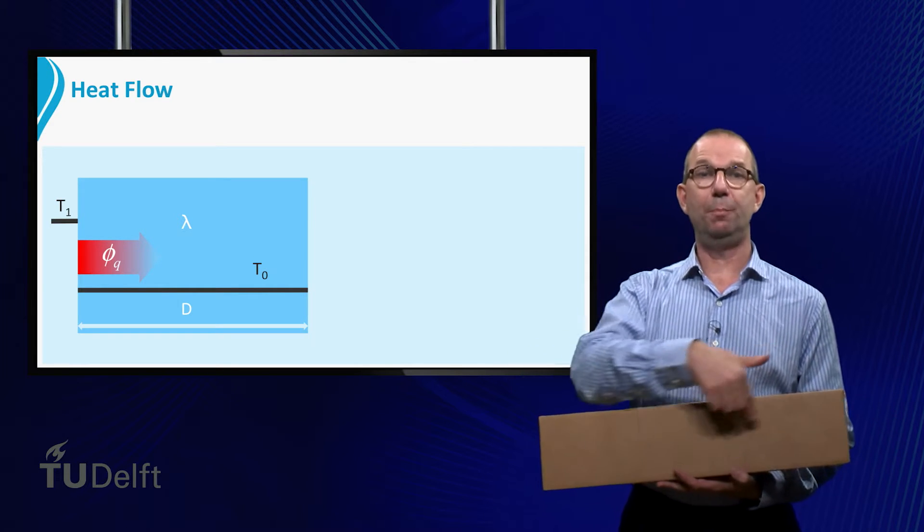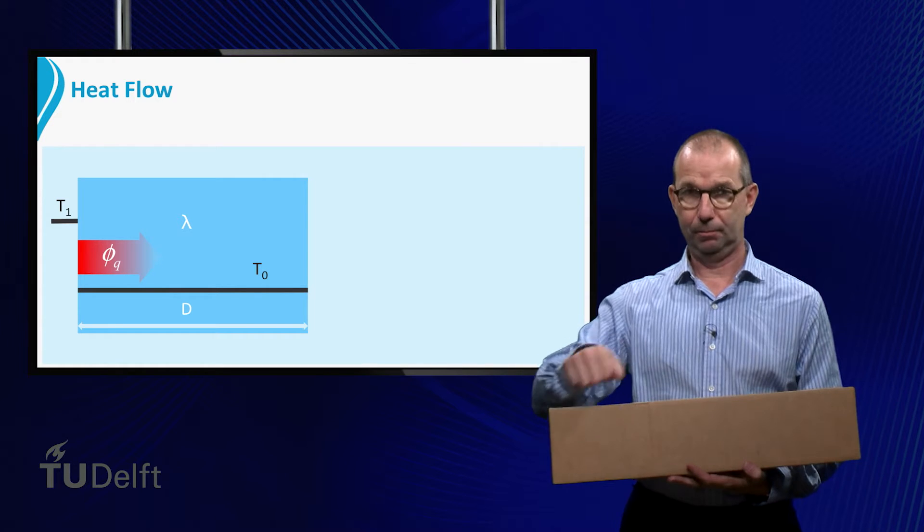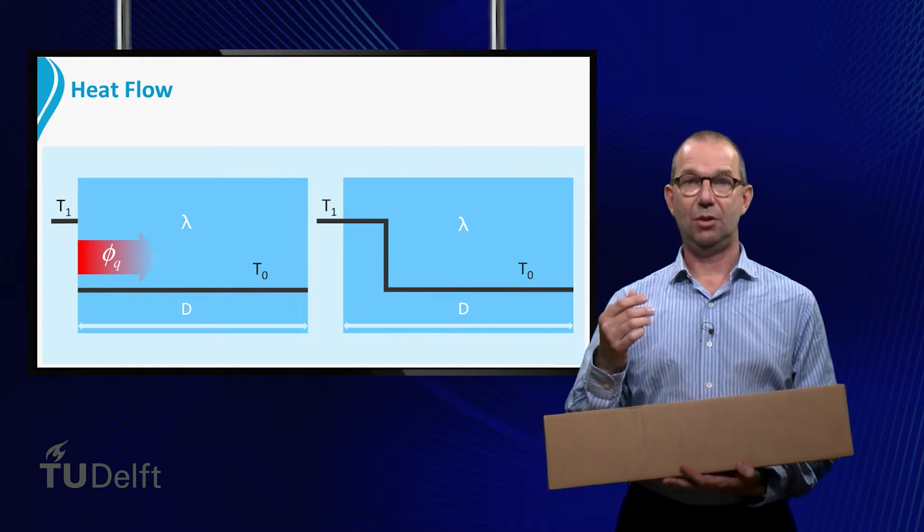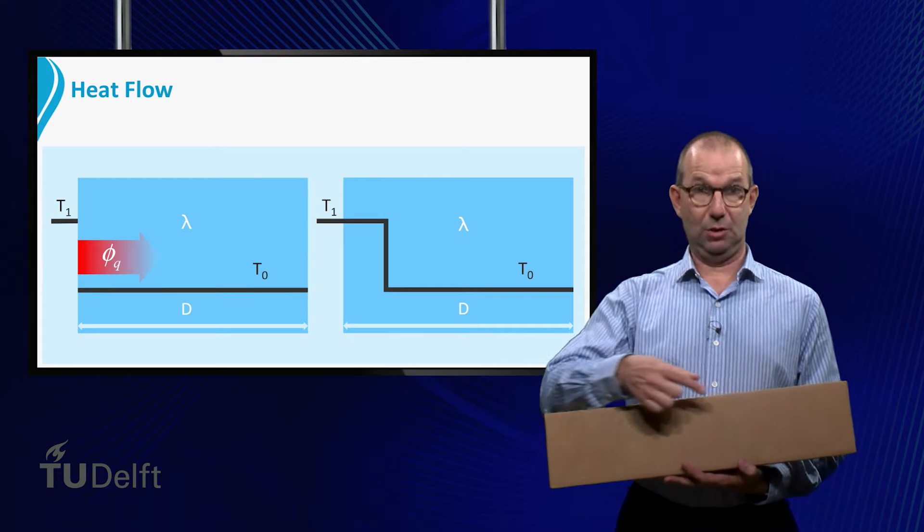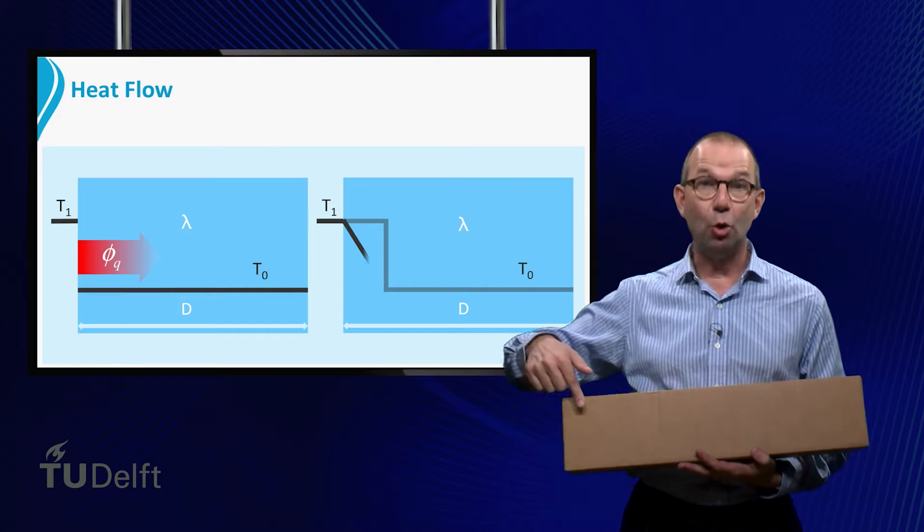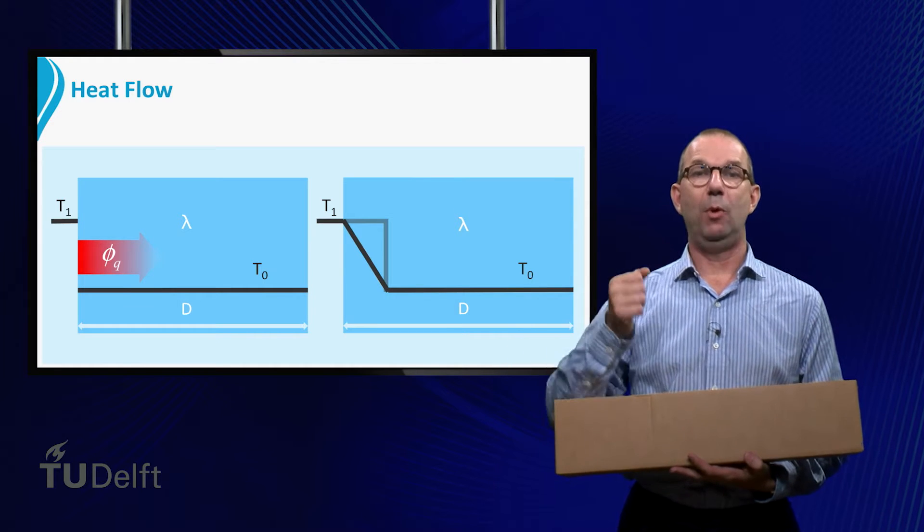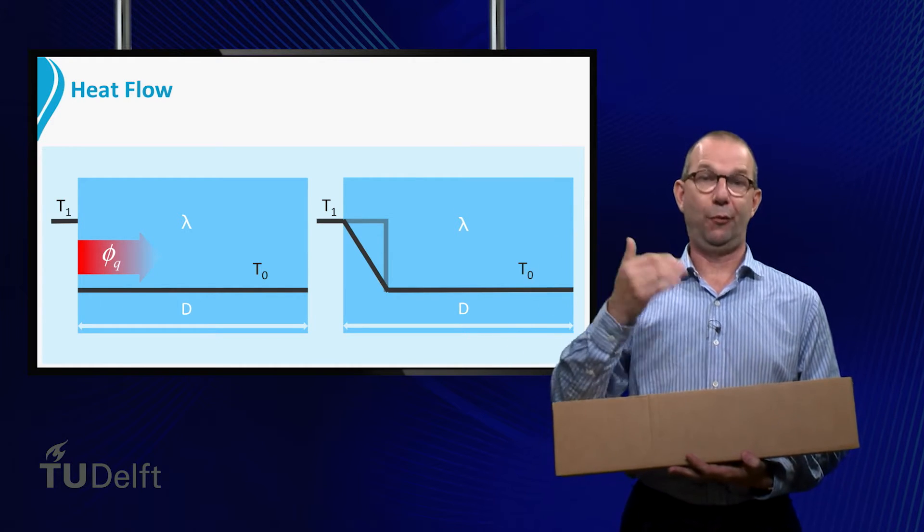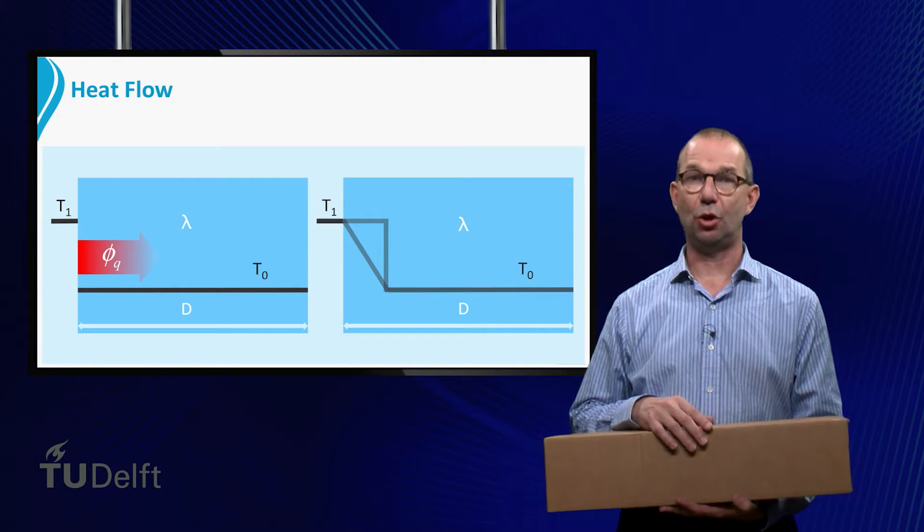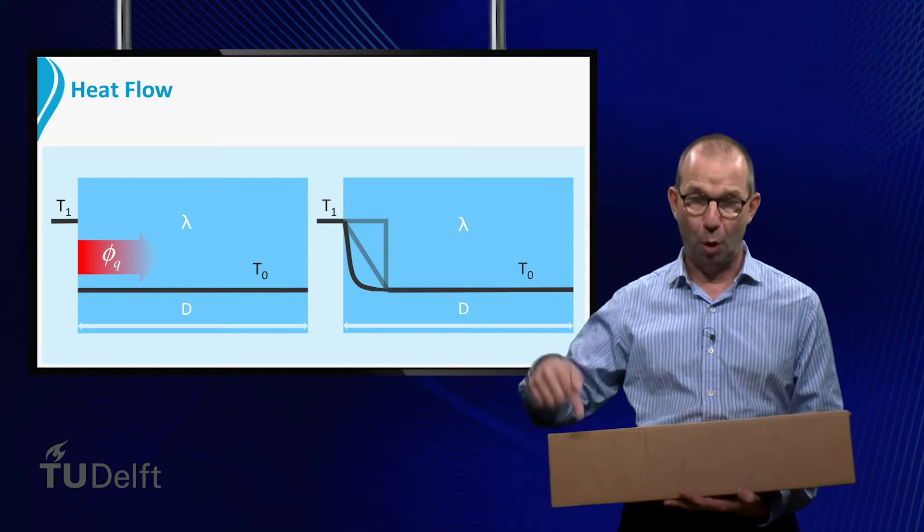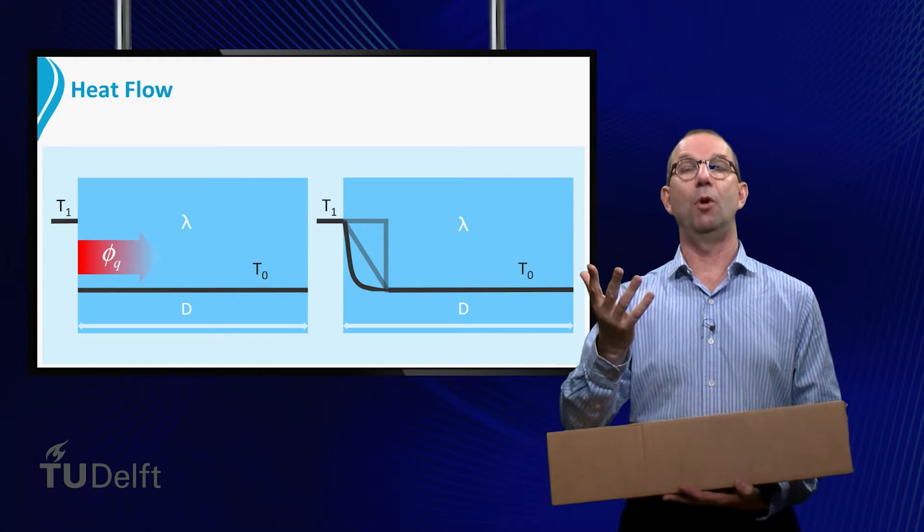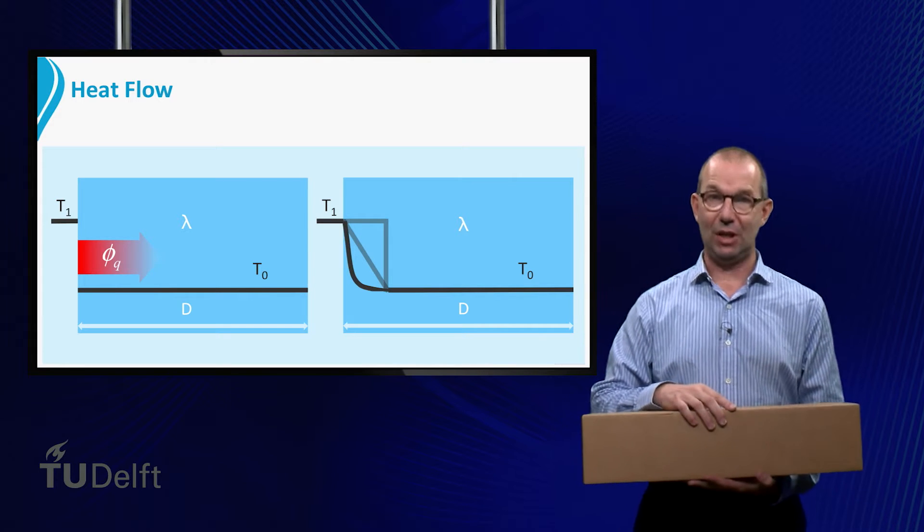What will the temperature distribution look in the plate? Is it a straight line such that the temperature T1 moves into the plate? Or is it a linear decrease towards T0 that we have seen in week 4 and 5? Neither of these two. It is a curved line that first drops fast, then bends over to gently connect to T0.